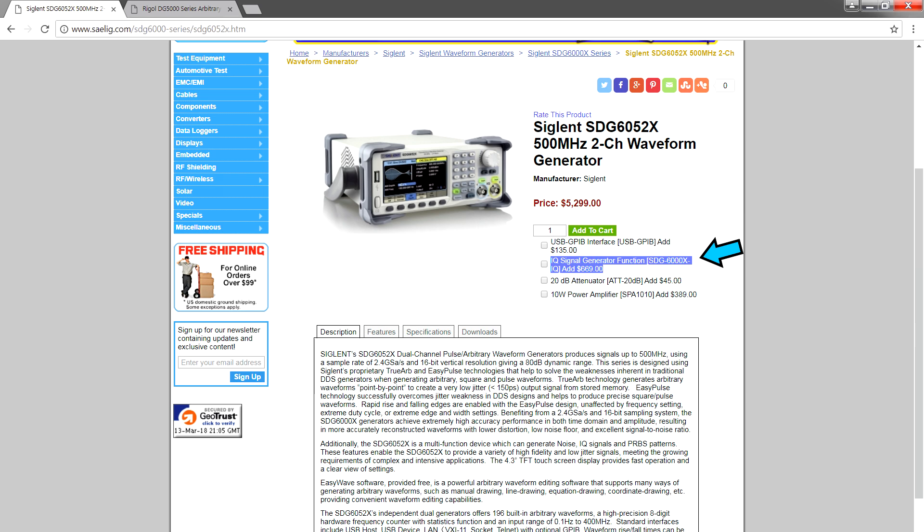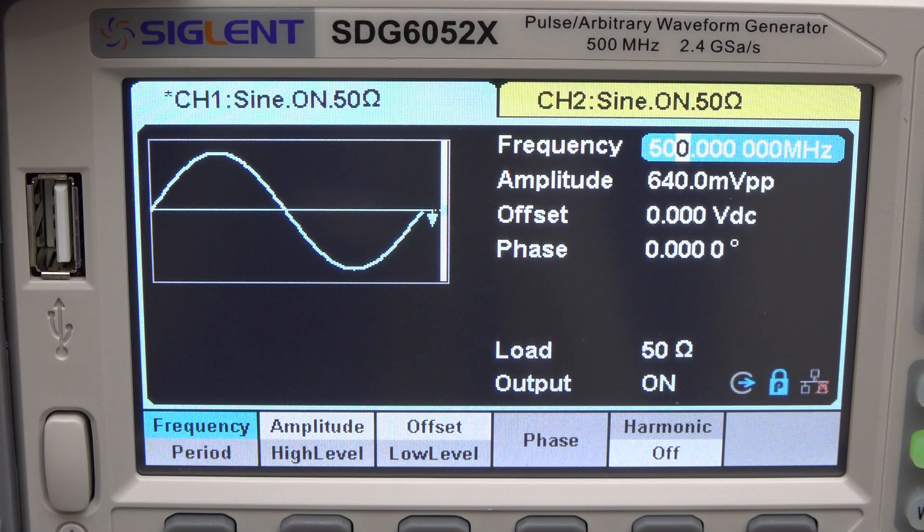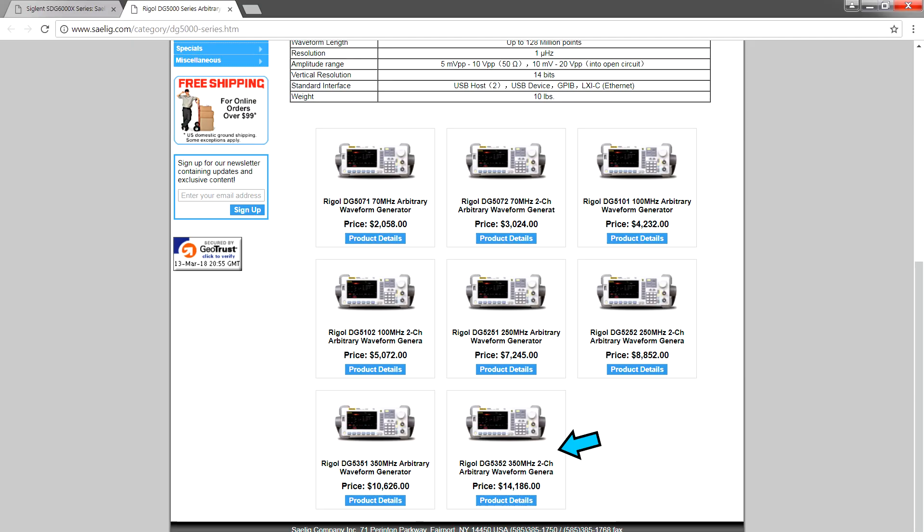Also with every variant you can buy an upgrade that lets you generate IQ signals from the two outputs. I insisted that Siglent send me the 500MHz version to evaluate because that's a big technical achievement to pull off, especially when you consider Rigol's closest model goes up to 350MHz and costs a lot more.